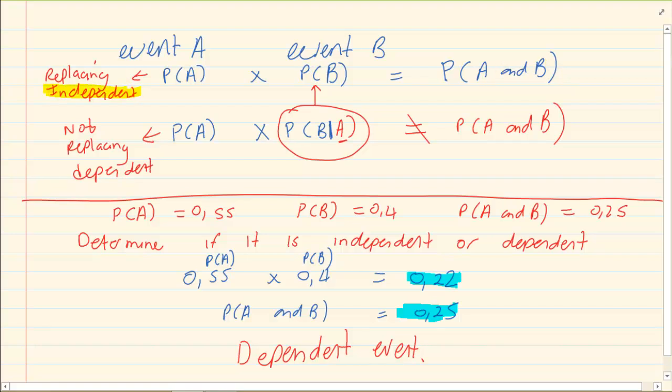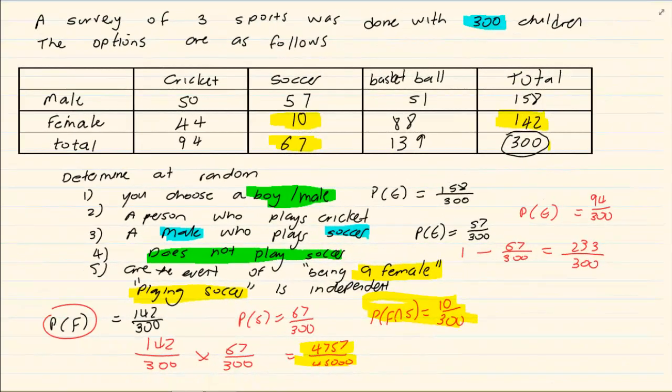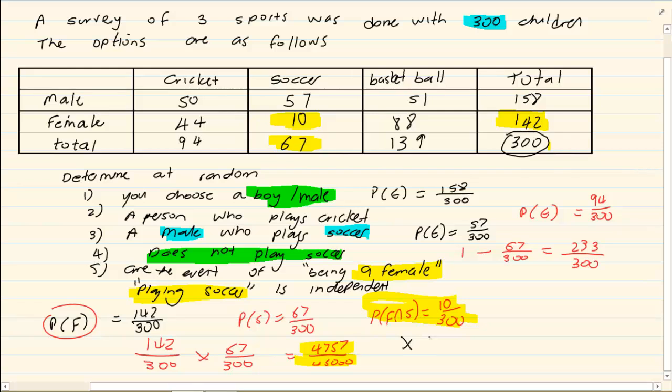So therefore they are not independent. So what would you write here? You would say the events are not independent.